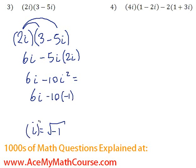Because if we square the i, the root cancels out, and we just get negative 1. So this will simplify into 6i plus 10, because negative 10 times negative 1 is positive 10. And that's it.